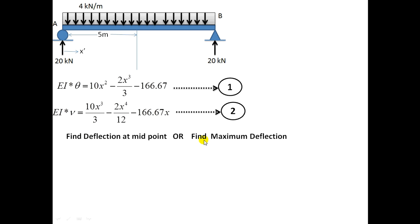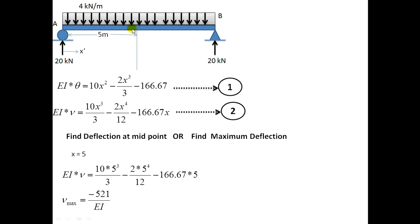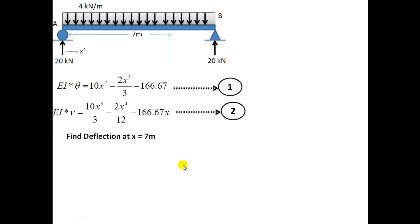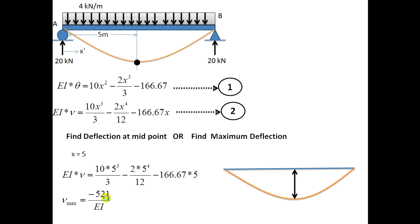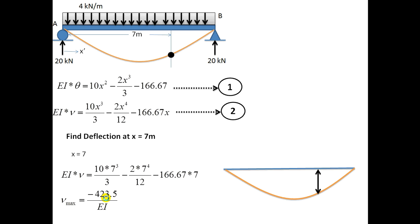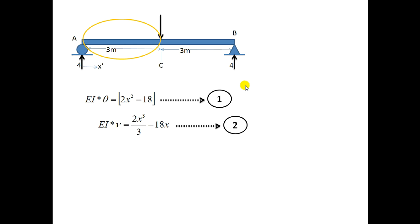For maximum deflection: since there is one type of loading on this beam, the maximum deflection will be at the mid-point. Put x equal to 5 into equation 2 and you will get the maximum deflection. This is the maximum deflection — a negative value, so it is downward. The question can also arise: find the deflection at x equal to 7 meters. That deflection value is also negative and less in magnitude than the maximum deflection of minus 525.